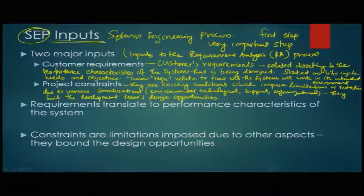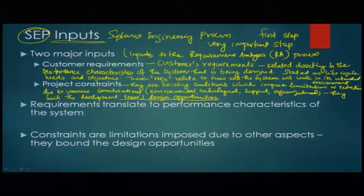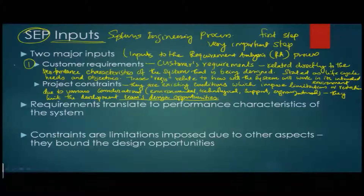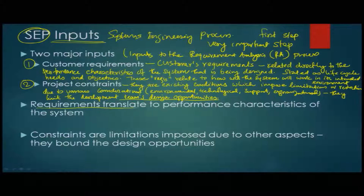The design opportunities — the team's capability to design the system — are restricted or constrained. The customer requirements or customer's needs will be quite significant and well thought through, but there are also constraints within which those needs have to be fulfilled. These two — customer requirements and project constraints — together comprise the input to the requirement analysis RA process. The requirements translate to performance characteristics of the system, derived from customer requirements.